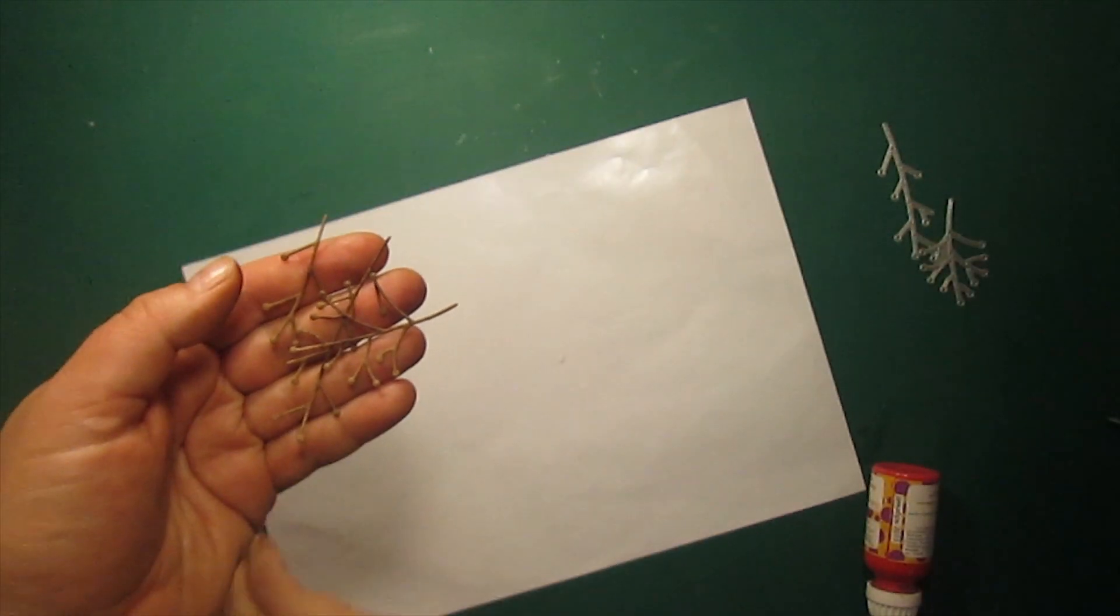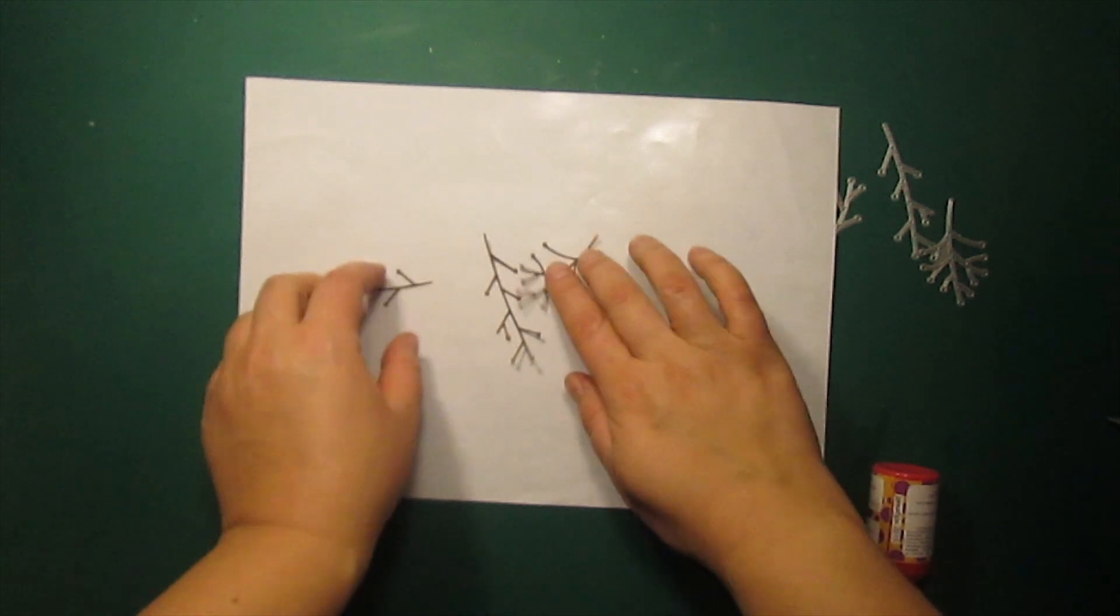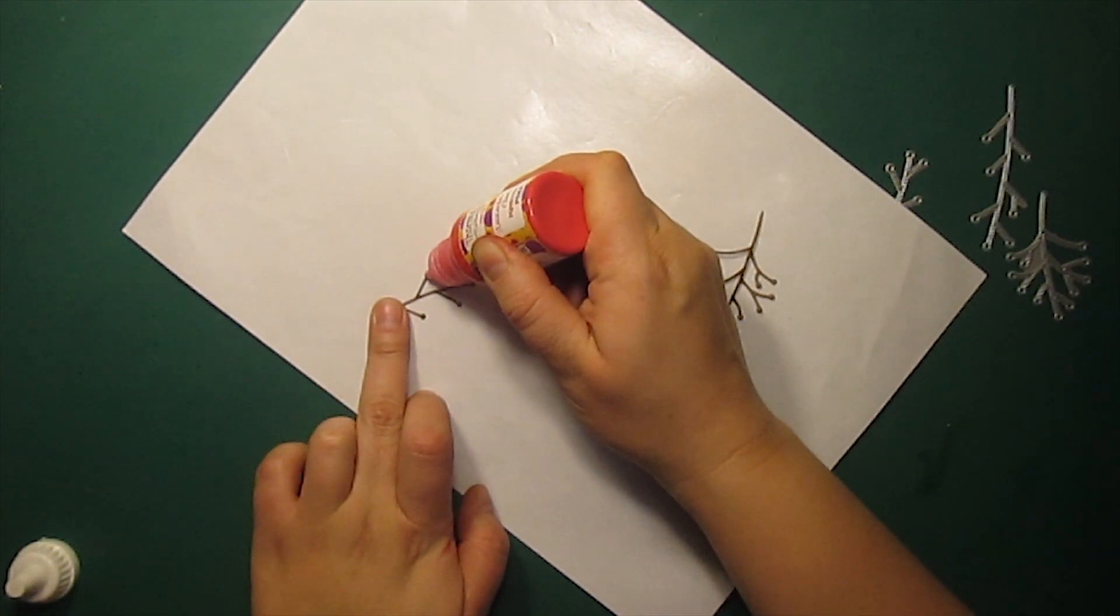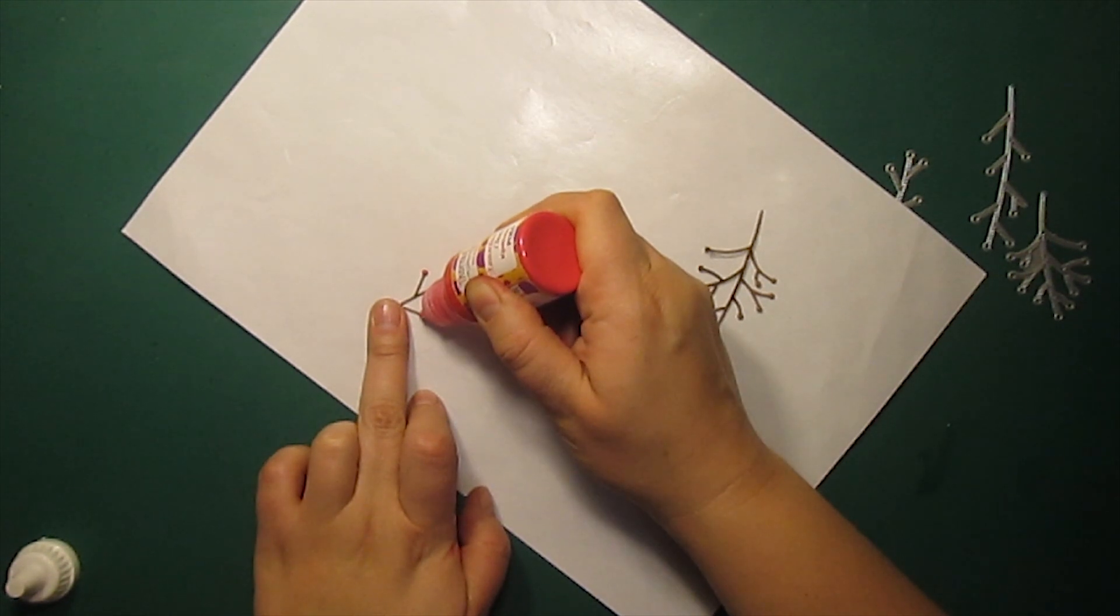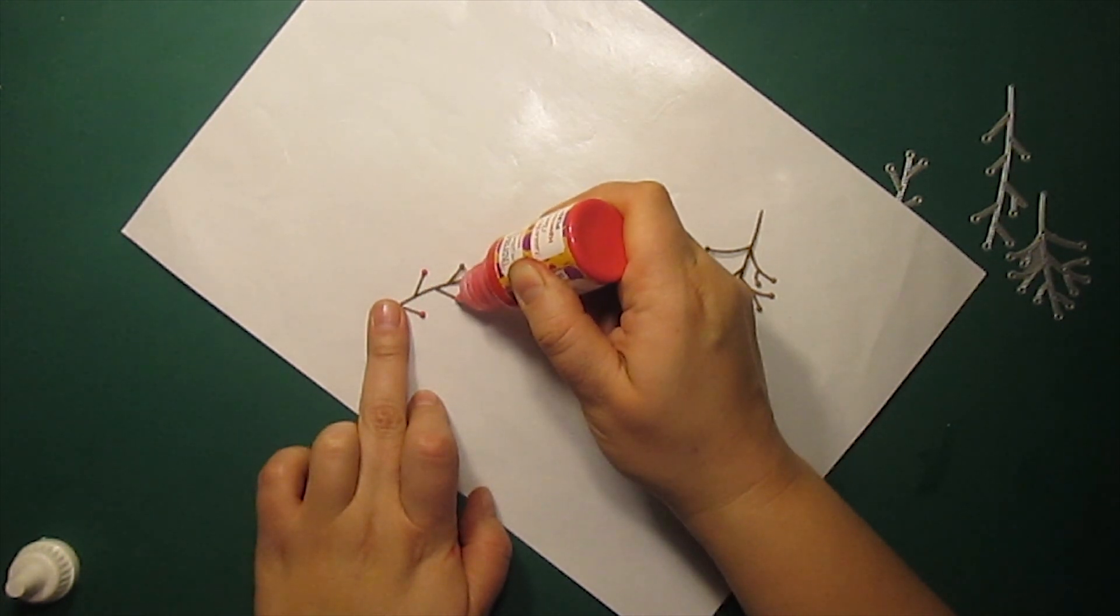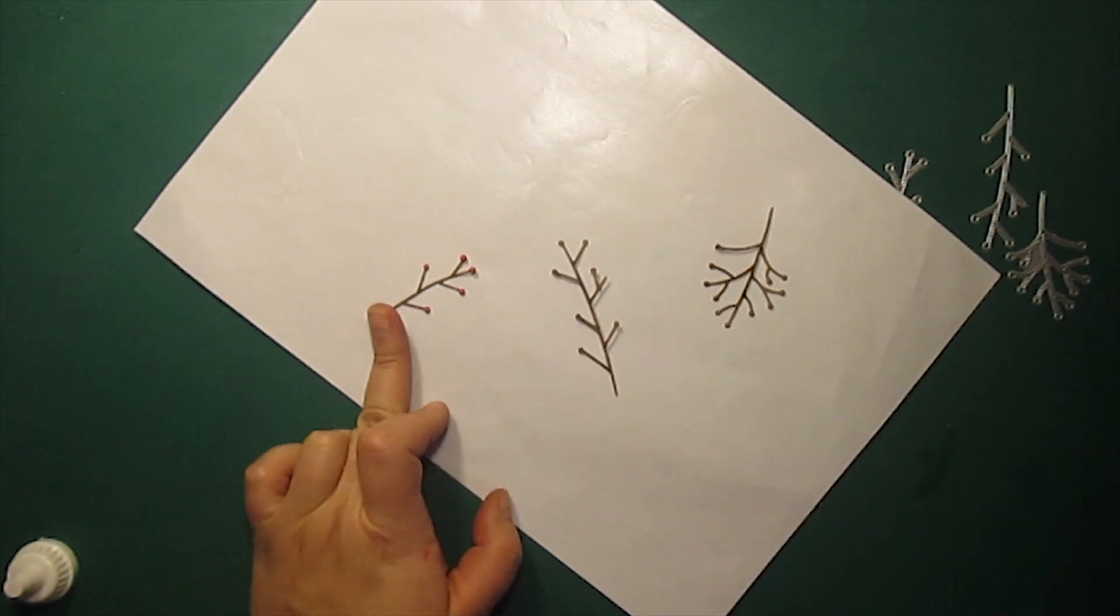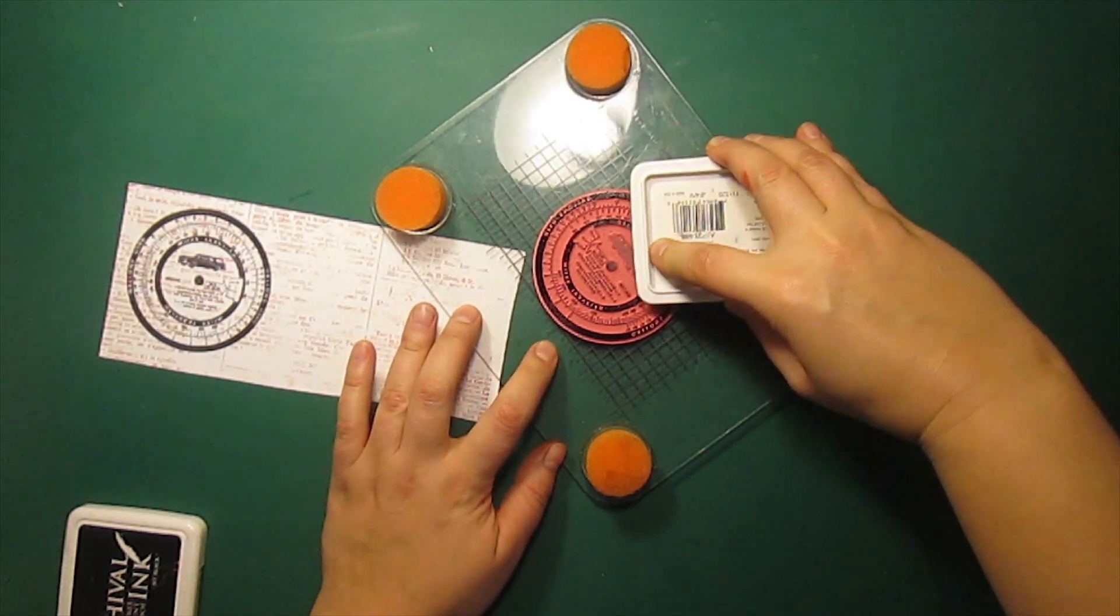I've die cut some berry branches out of craft card stock and to create berries I'm using liquid enamel dots. Just squeezing out some drops and then I have to let them dry completely. And while they are drying I'm going to work on the inside of the card.